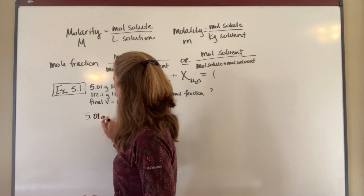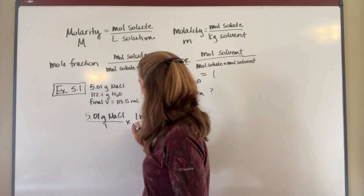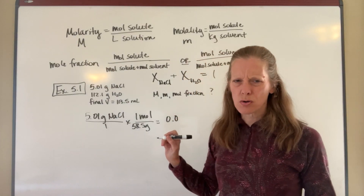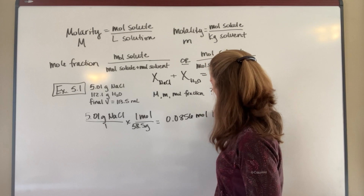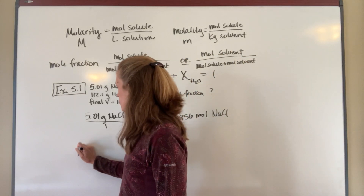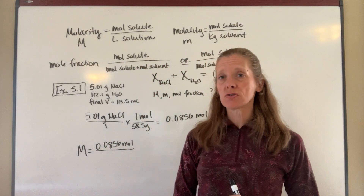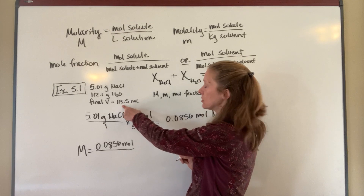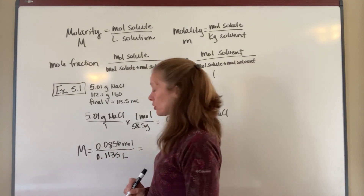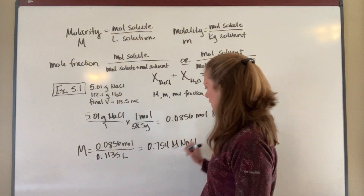I take 5.01 grams of NaCl and divide by 58.5 grams per mole, which gives me 0.0856 moles of NaCl. For molarity, that's moles of solute per liters of solution. The molarity is 0.0856 moles of NaCl divided by 0.1135 liters of solution (converting 113.5 mL to liters), which gives 0.754 M NaCl — three significant figures.